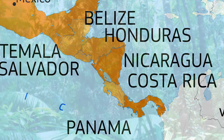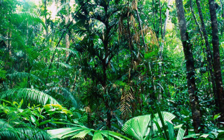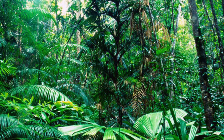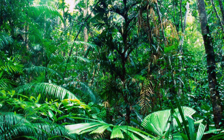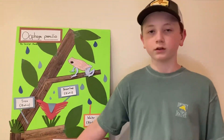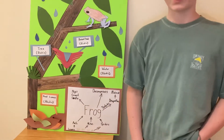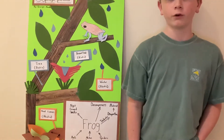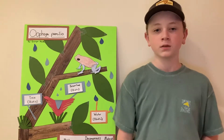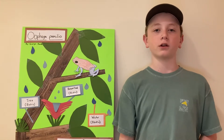Its ecosystem is the rainforest. The rainforest includes many abiotic factors like dead leaves and water. The dead leaves are found on the forest floor and give shelter and habitat to the frogs. There is a lot of water available to the frogs because it rains a lot in the rainforest.